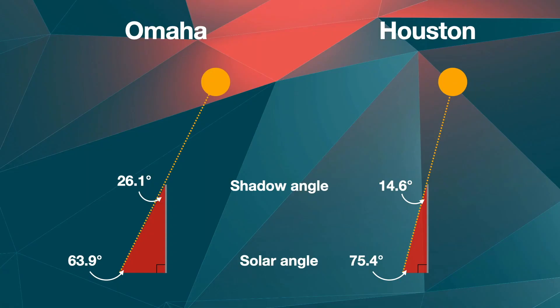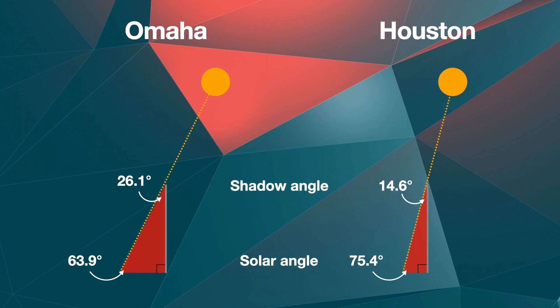Using a sun angle calculator, we can find the angle the sun is above the horizon on May 1st at local noon. For Omaha the solar angle is 63.9 degrees and for Houston it is 75.4 degrees.